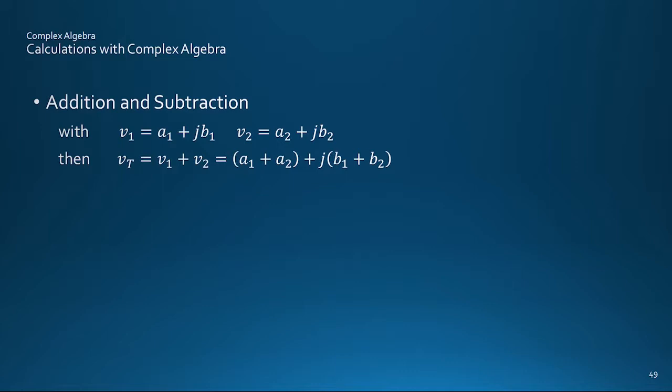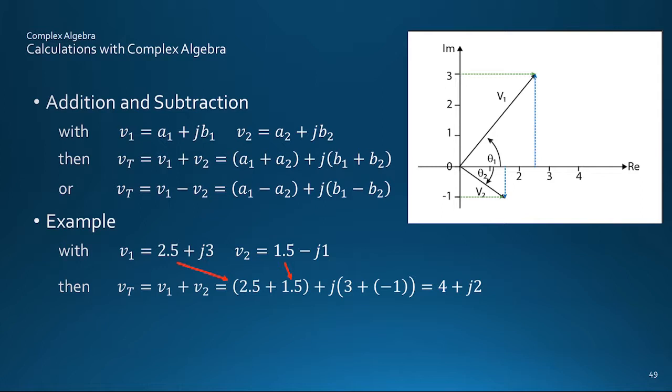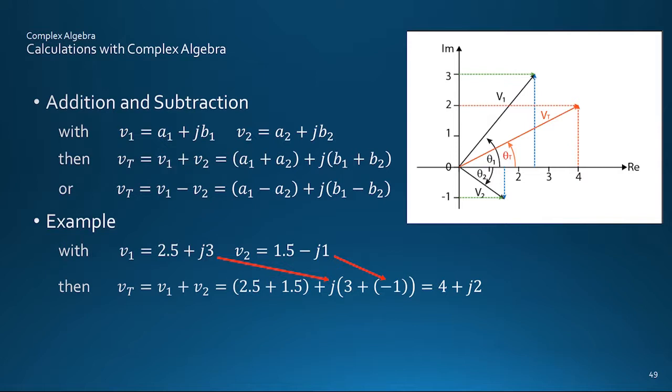For the addition of two variables v1 and v2 in Cartesian form, we add the real and imaginary bits separately, or for subtraction, subtract the real and imaginary bits separately. So, for example, to add v1 and v2, here we add the 2.5 real bit of v1 to the 1.5 real bit of v2 to get 4 as the real bit of the total vt. And then the imaginary part of vt is 3 from v1 added to minus 1 from v2 to give 2. So vt is simply equal to 4 plus j2.